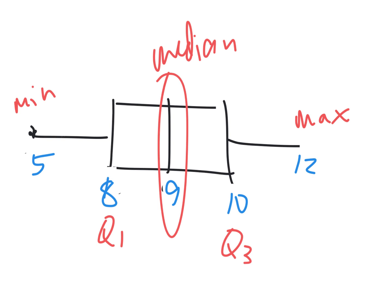Five, eight, nine, ten, twelve. What was the median again? Nine. What's the median of the bottom half? Eight. What's the median of the top half? Ten. And those have names. They're Q1 and Q3.